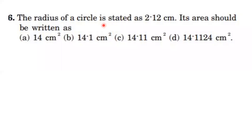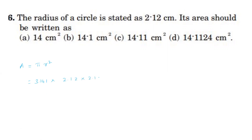Sixth question: the radius of a circle is stated as 2.12 cm. Its area should be written as? We know the formula for area of a circle: Area = π r². So we calculate π × 2.12 × 2.12, since r² is needed.